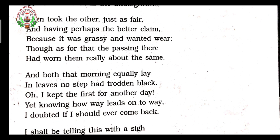'But it was grassy and wanted wear.' Why did the poet feel that this path was better for him? Because it was fresh — grass had grown on it and it had not been used much. That means this path was not used by many people or not used earlier. The path was grassy. Here the poet was adventurous; he chose a path not walked over by many people. 'Wanted wear' means no traveller had walked on that path. The poet felt happy that he chose the correct path — the one that was grassy and not used by travellers.